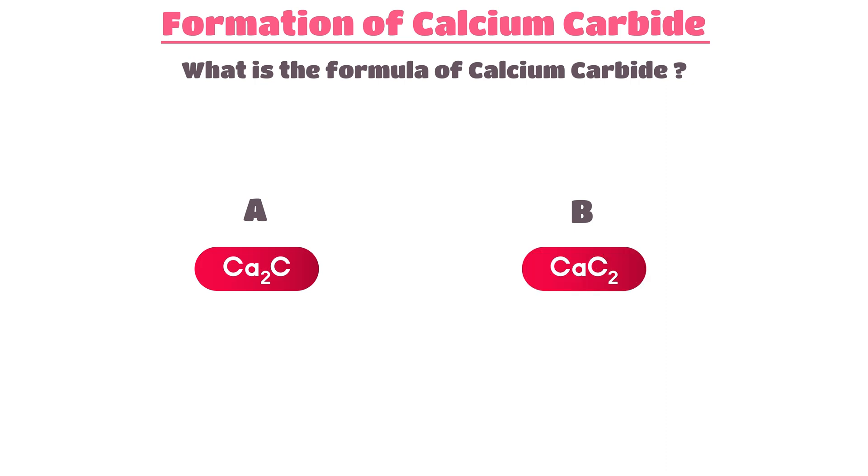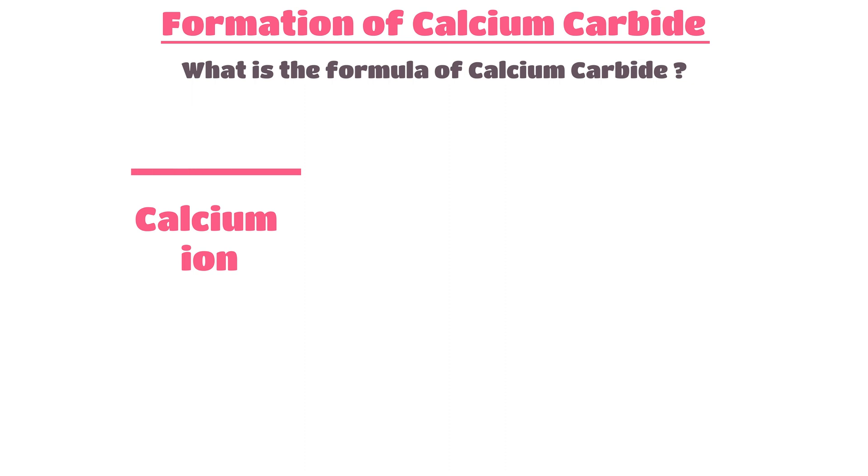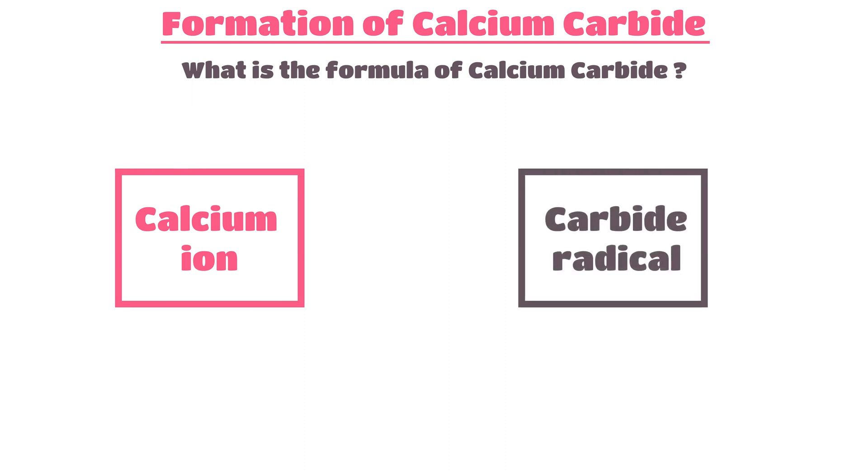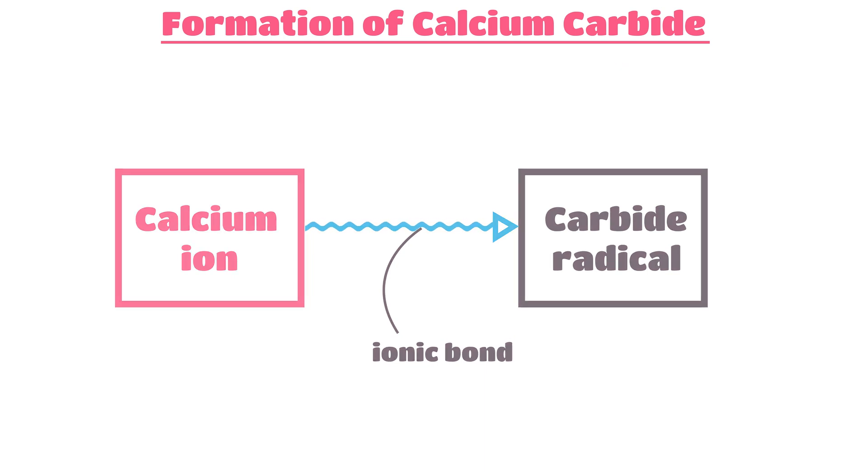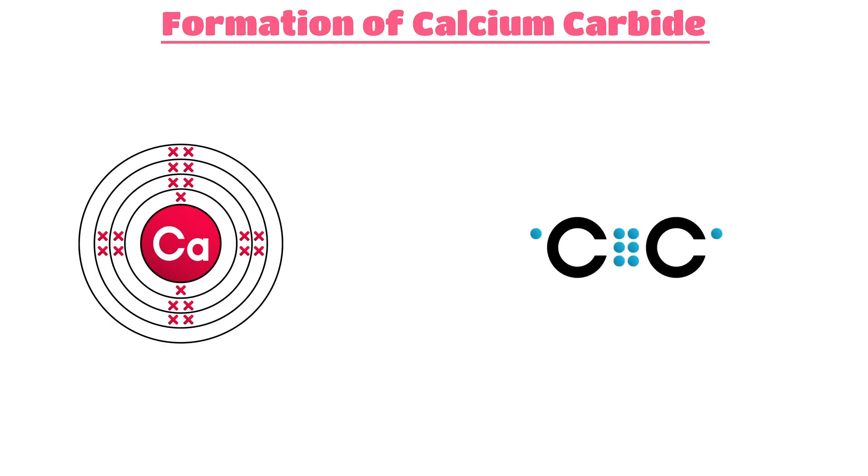Calcium carbide forms when a calcium ion and a carbide radical bond together to form an ionic bond. The electronic arrangement of calcium is 2,8,8,2, while that of carbon is 2,4.